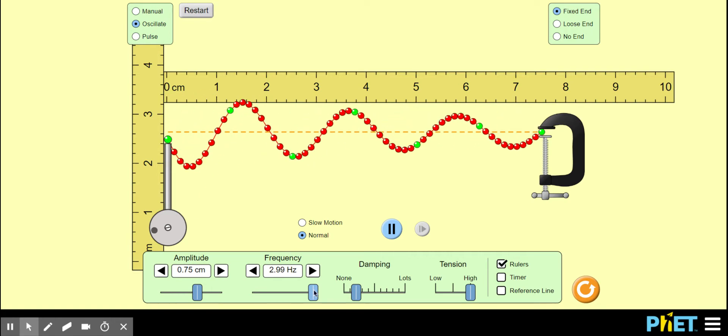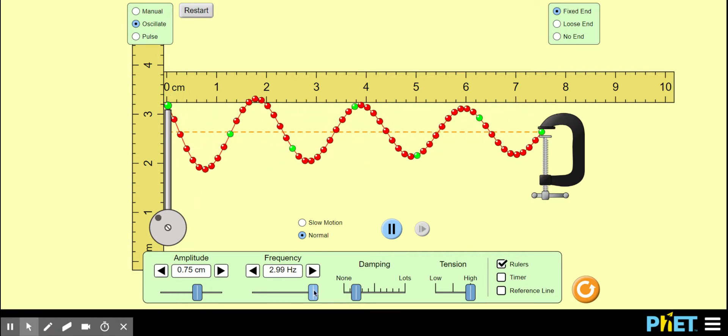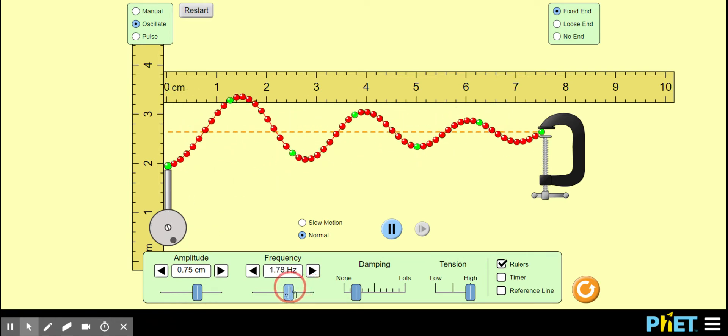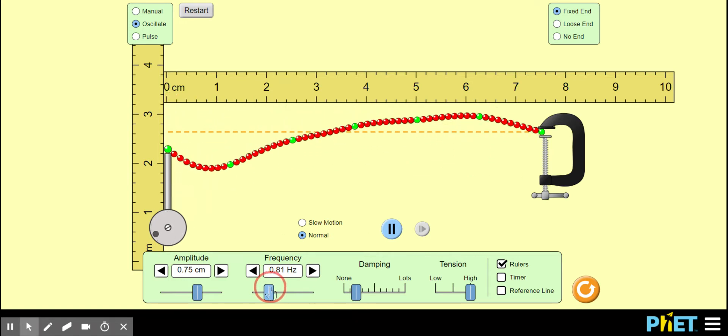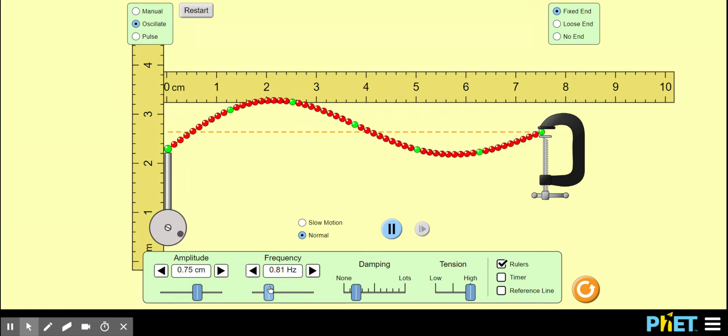Let's take a look at what happens when we decrease the frequency. We should expect to see that the energy of the wave decreases. I think you can infer this from how less energetic the wave is moving right now. That is the relationship between energy and frequency.